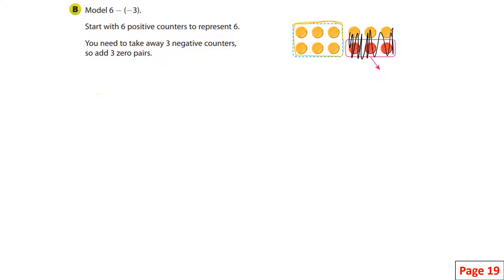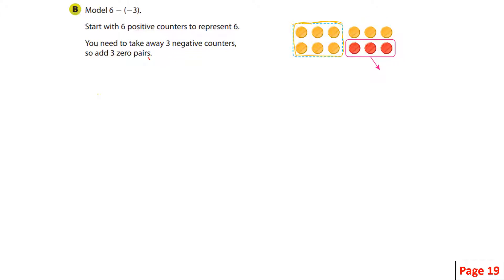So we have to add zero pairs. This is a zero pair — when I add that up, that is like adding zero. There's something there but it represents zero. If I add these in, each represents zero, so really all that stuff there represents zero. But in doing so, we can now take away those three negatives.